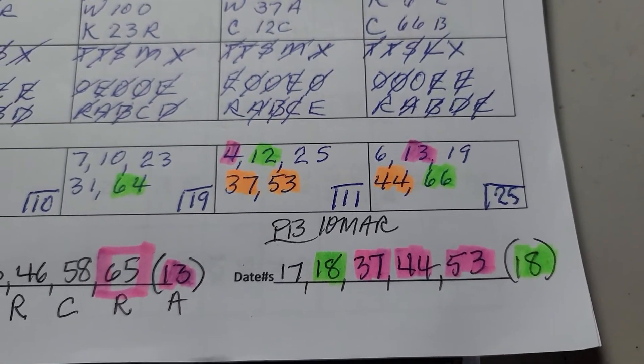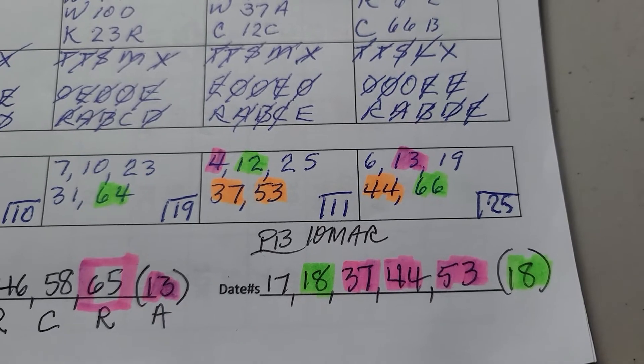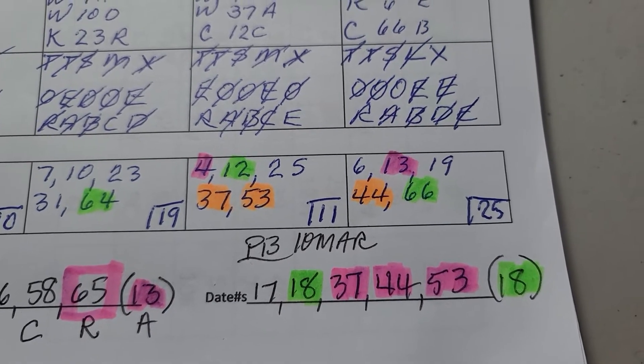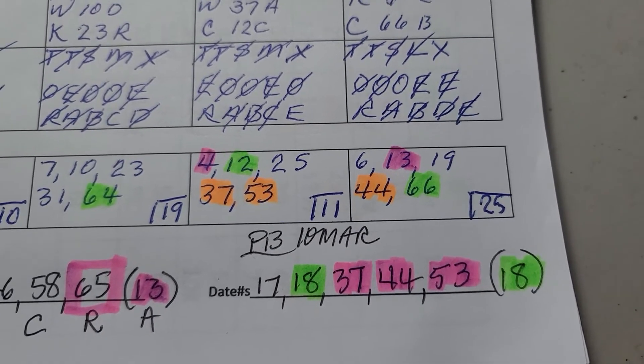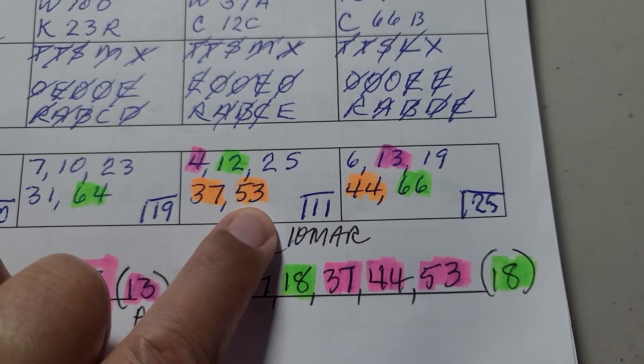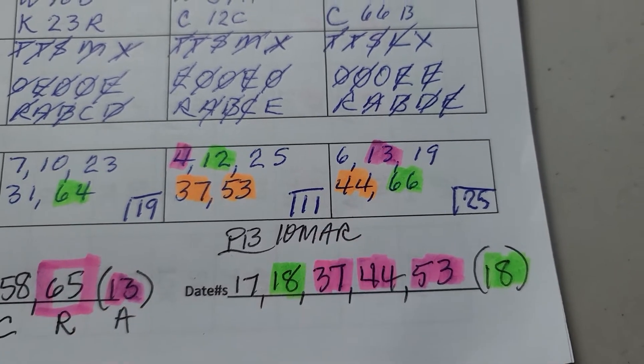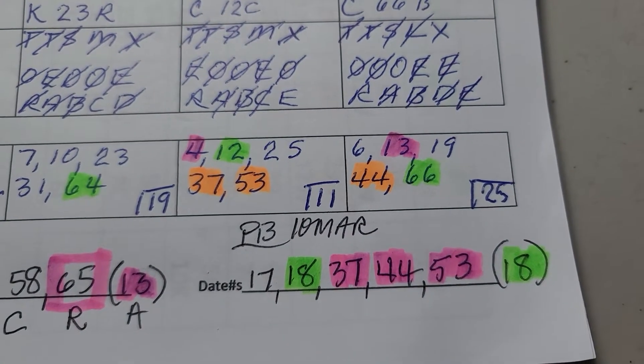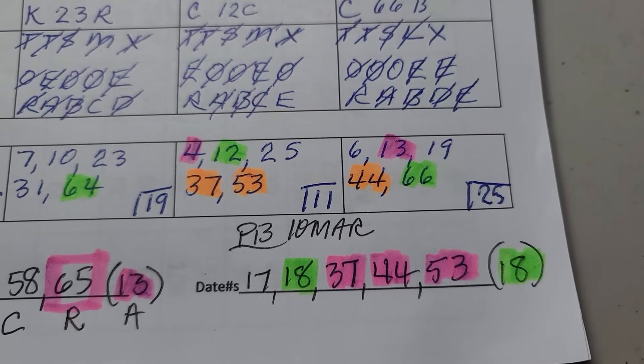And geez, the number sets that I made for the Mega Millions, which was drawn last night, performed really well. In fact, we had three hits, and two of the numbers, 37 and 53, were on the same ticket, then 44 was right here. Really, really, really good showing.